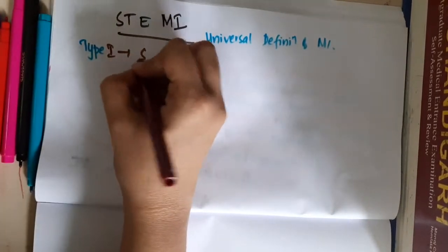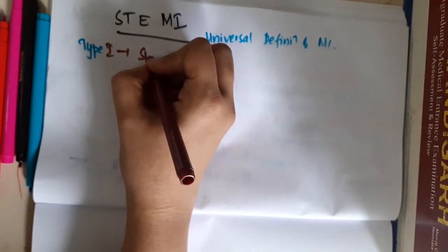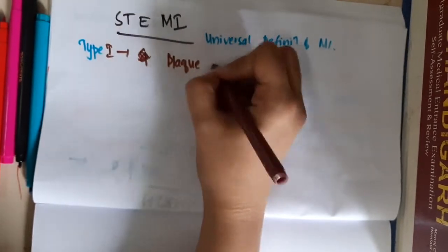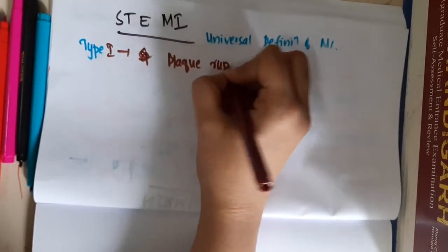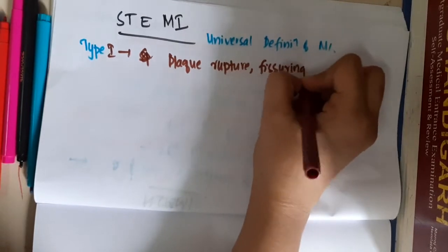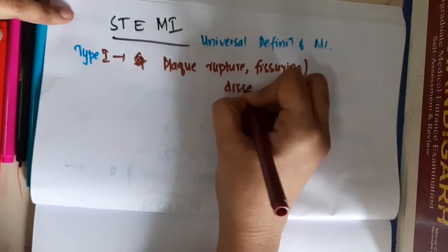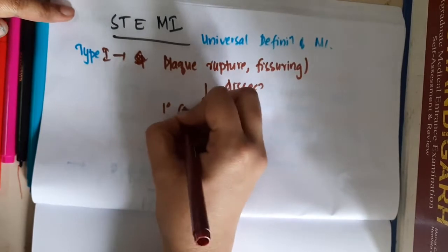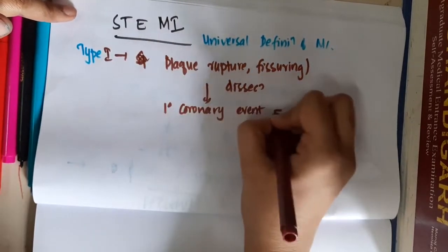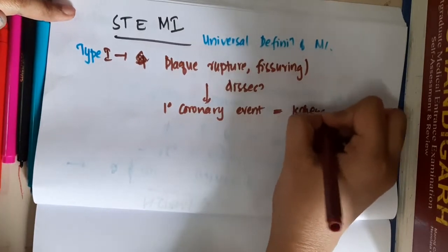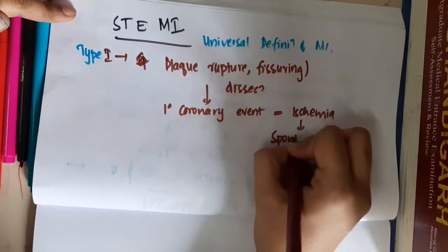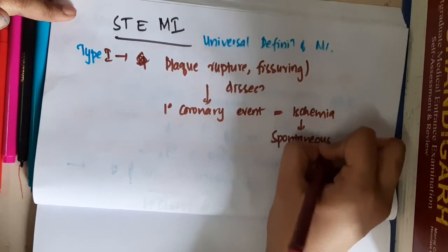First we have Type 1. In Type 1, there will be plaque rupture. Due to plaque rupture, fissuring, or dissection, there occurs a primary coronary event. This primary coronary event results in ischemia, and this ischemia will result in spontaneous MI. This is Type 1.